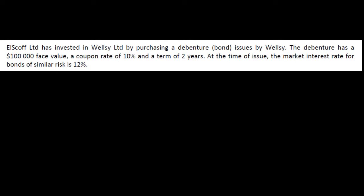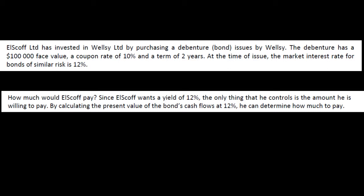Now in any situation, it is a good idea to write this stuff down — just pull out the stuff that you need. This is essentially the information we have here. We've got four pieces of information: the face of the instrument which is $100,000, the coupon of 10%, the 12% market rate, and the two-year term. What we don't know is how much the fair value of this thing was, which means we don't know how much money L. Scoff actually paid to get this instrument.